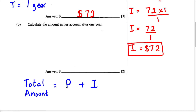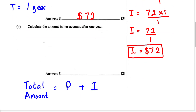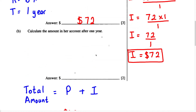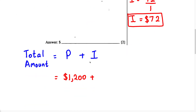We know the principal is $1,200 — this is how much Paula deposited into the savings account. So we write $1,200 plus I, where I is the interest. We found the interest for one year in Part A, and that's $72. So after one year her interest is $72, and we can add $72 to the principal.